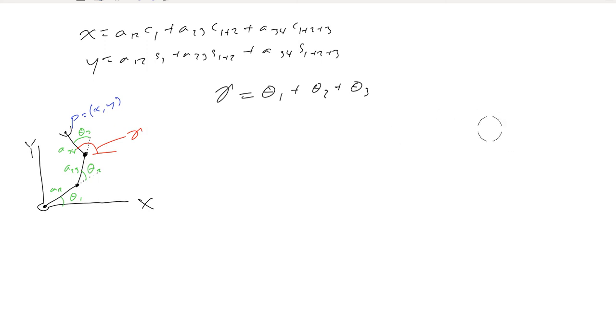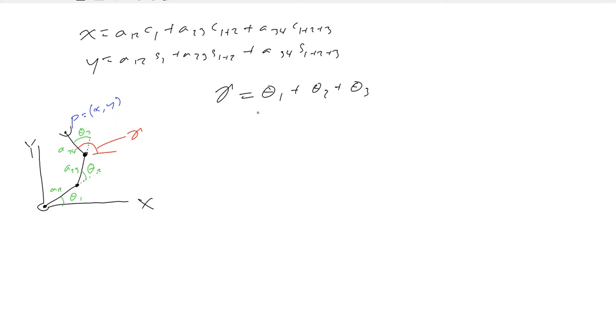So there is the forward kinematics problem. We're given the joint angles and the robot parameters, the link lengths, and we find the x, y, and gamma coordinates. So now we have the inverse problem. So for inverse, we're given x, y, and gamma.